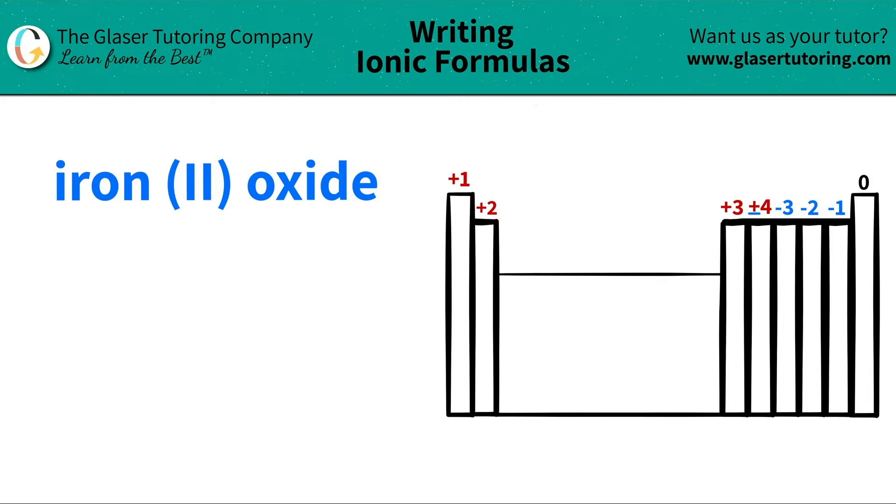Today we're going to write the formula for the ionic compound iron(II) oxide. Let's see where these elements are located on the periodic table and then we'll write the formula from there.